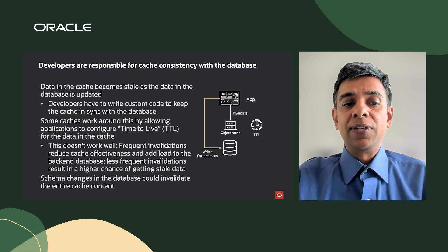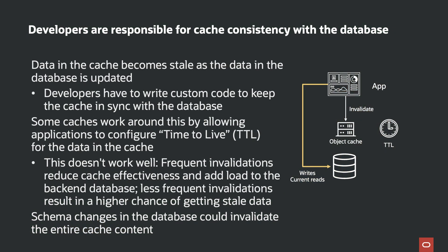Developers are also responsible for cache consistency with the database. Data in the cache becomes stale as data in the database gets updated, and developers have to write custom code to keep the cache in sync. Some caches work around this by allowing applications to configure TTL — time to live. But frequent invalidations reduce cache effectiveness and add load to the backend database, while less frequent invalidations result in a higher chance of stale data. That's why TTL is not always the best approach.